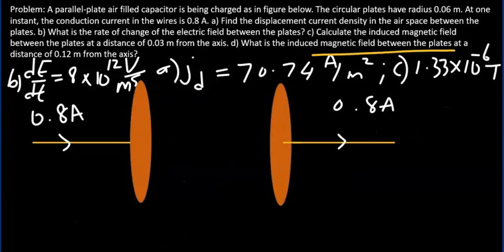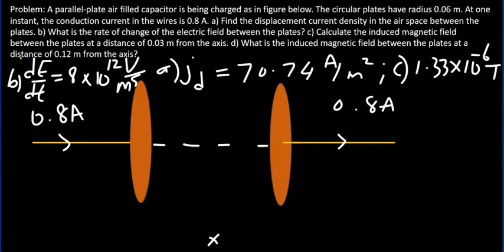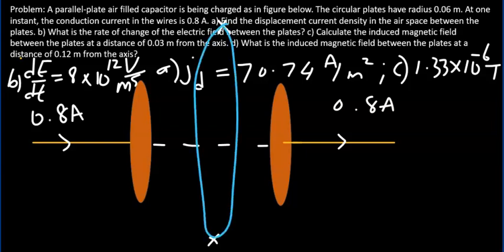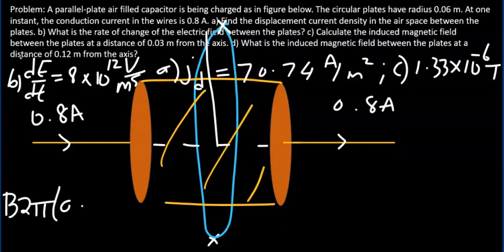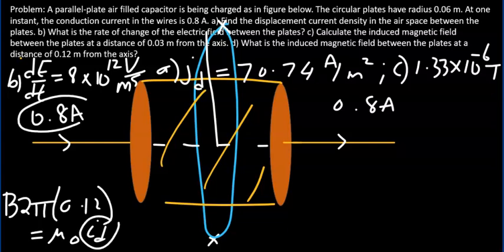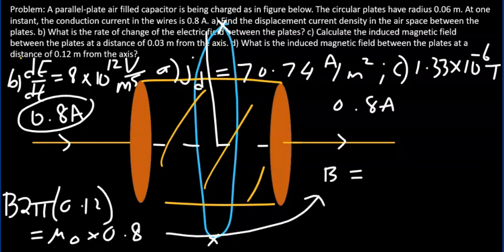Part D: What is the induced magnetic field between the plates at a distance of 0.12 meter from the axis? That point is outside the plate. Ampere's law gives B × 2π × 0.12 = mu-naught × Id, where Id is the entire displacement current, which equals the conduction current 0.8 ampere. Solving for B at that distance gives the same answer as above: 1.33 × 10⁻⁶ tesla. And that solves the problem.